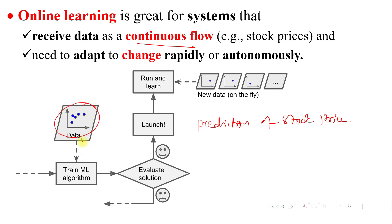Based on the available data, we train our model and then evaluate it. After evaluation, we launch our model. Whenever new data arrives, our model automatically runs again — this type of learning is called online learning.